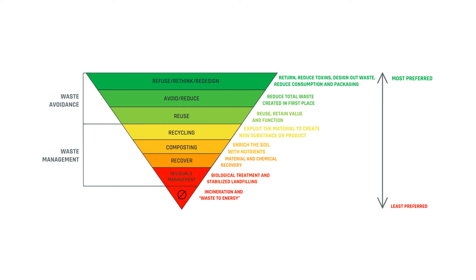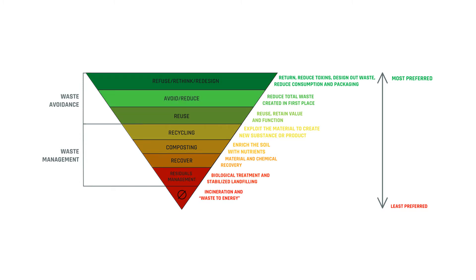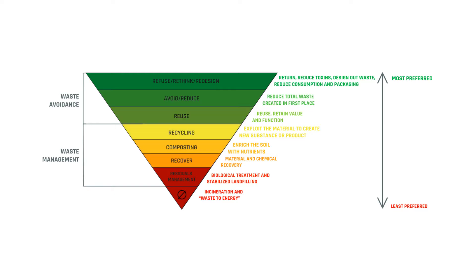The first part is waste avoidance. We have to rethink and redesign objects to reduce waste. After using objects we need to reuse them — don't use disposable goods. When it comes to waste management, the second part of the hierarchy, the most preferable option is recycling to maintain the polymer matrix.